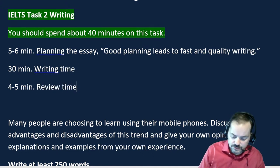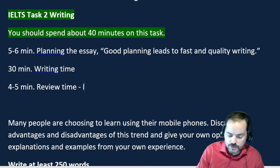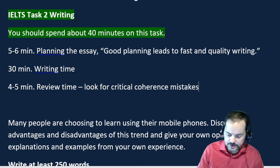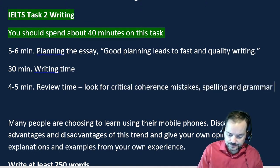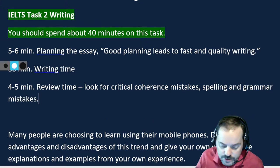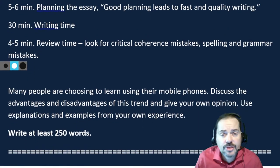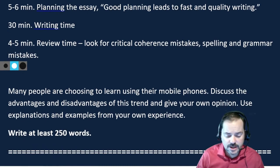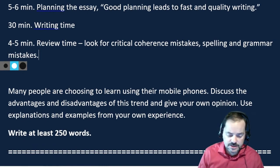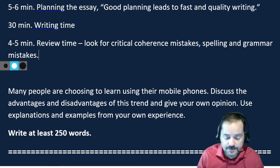In your review time, you are looking for critical coherence mistakes, spelling and grammar mistakes. That's basically how you should think about your time: 5 to 6 minutes planning the essay, 30 minutes writing time, and 4 to 5 minutes review time.